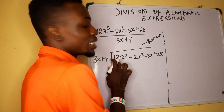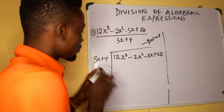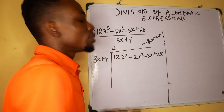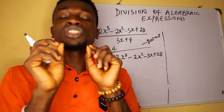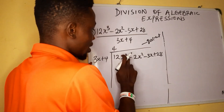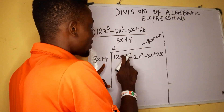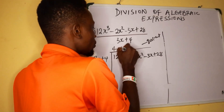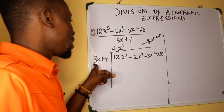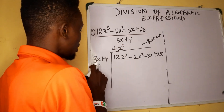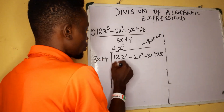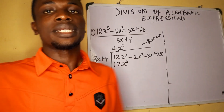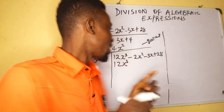Use the first expression and divide. 3 divides into 12 to give us 4. x divided by x cubed — subtract the powers: 3 minus 1 gives us x to the power of 2. So our first quotient term is 4x squared. Then multiply that back: 4 times 3 is 12, giving us 12x cubed. We are done with the first part.